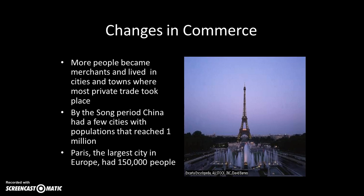Song China was so successful that many cities grew to enormous size for the medieval period. Many people became merchants, and merchants wanted to live in cities — something to remember when we discuss Europe later. By the beginning of the Song period, China already had several cities where the population had reached or exceeded one million people. By comparison, the largest city in Europe at the time, Paris, had about 150,000 people — roughly 15% of one of those Chinese cities.